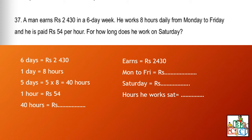Question number 37: A man earns 2430 rupees in a six-day week. He works eight hours daily from Monday to Friday and is paid 54 rupees per hour. For how long does he work on Saturday? For six days he is paid 2430 rupees. From Monday to Friday — five days — he works eight hours daily, so that is five times eight, which equals 40 hours. For one hour he is paid 54 rupees, so calculate how much he earns for 40 hours.